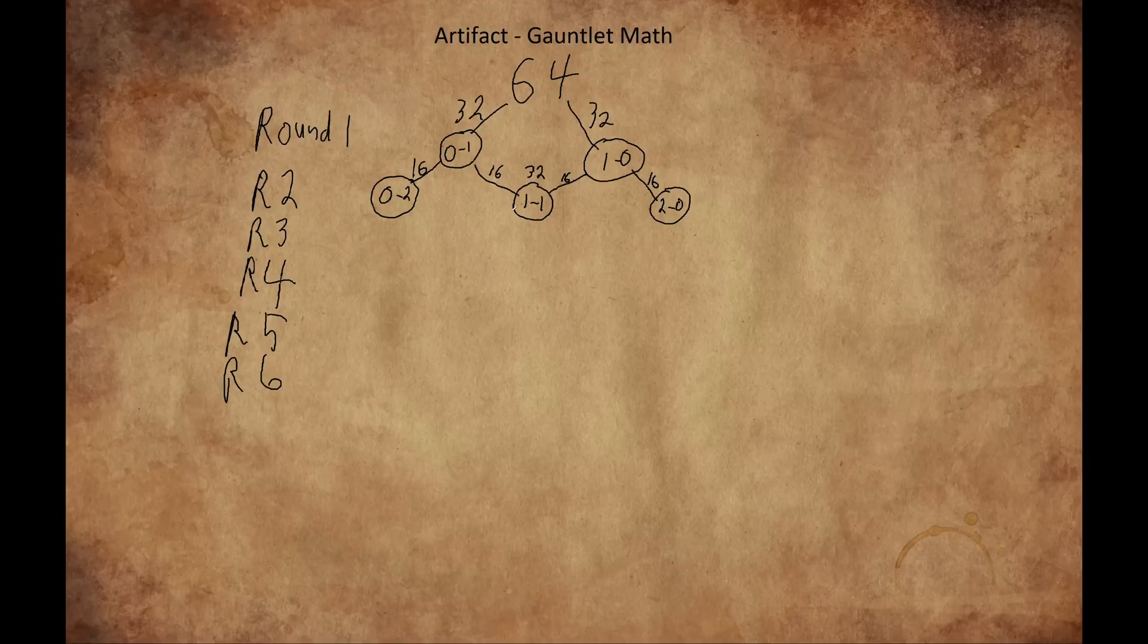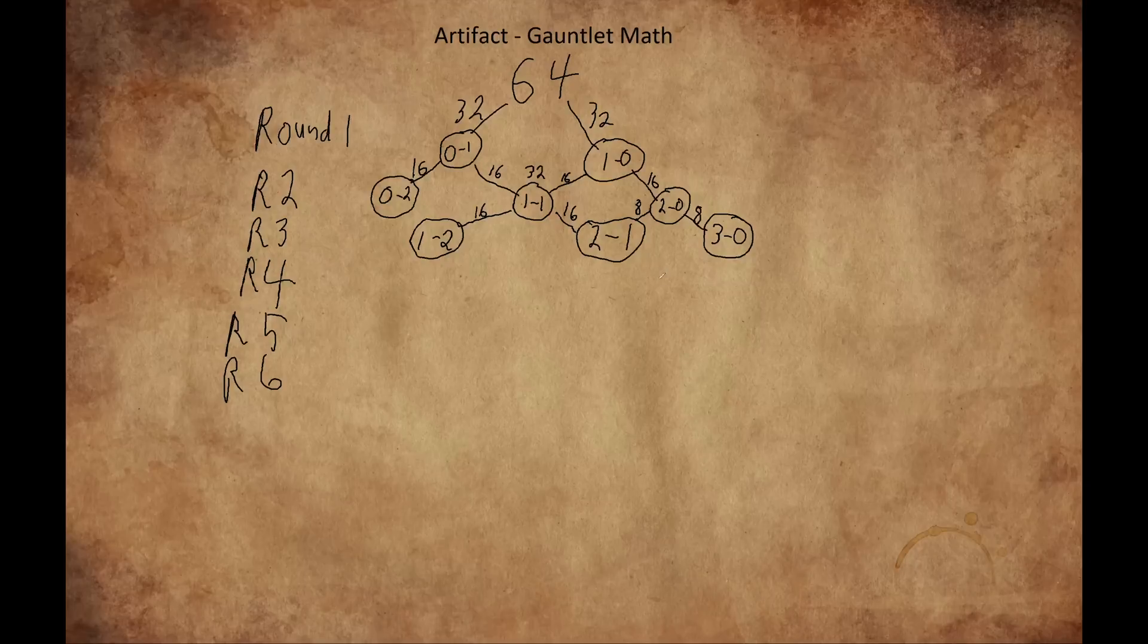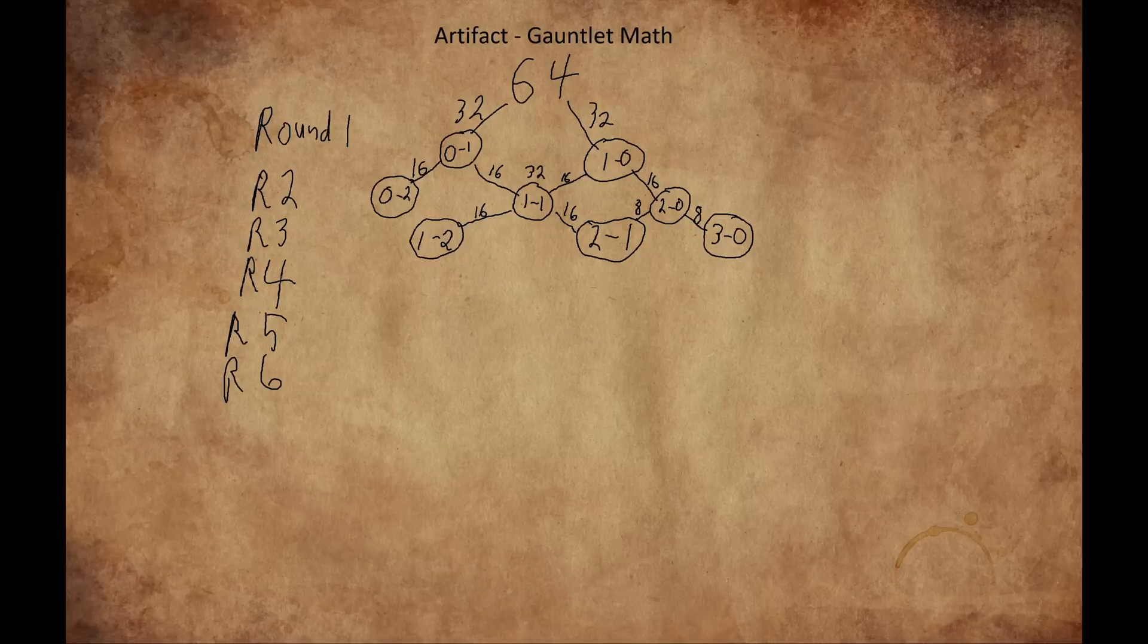Round 3, 16 more players lose out, finishing 1 and 2, 8 players move on up the undefeated side to 3 and 0, 16 players move up to 2 and 1 from 1 and 1, and 8 drop down to 2 and 1 from 2 and 0, putting 24 at 2 and 1.